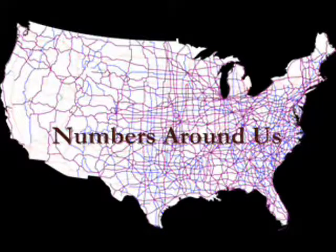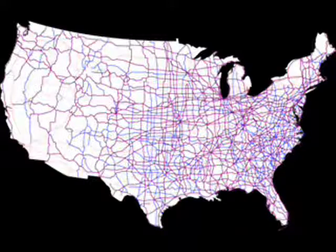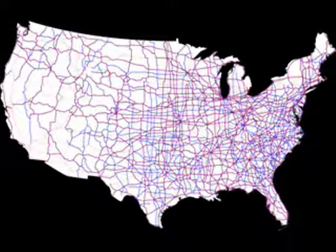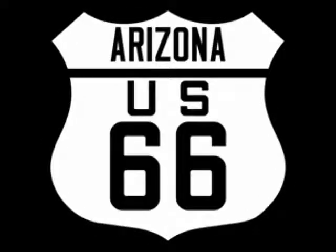In deciphering the numbers around us, let's start with something fairly easy, although this map makes it look a little more difficult than it is. This is the Federal Highway System in the United States. The lower numbers are in the north and the east, and the Federal Shield is used to designate them. These have predominantly disappeared given the advent of the freeway interstate system. But let us not forget Route 66.